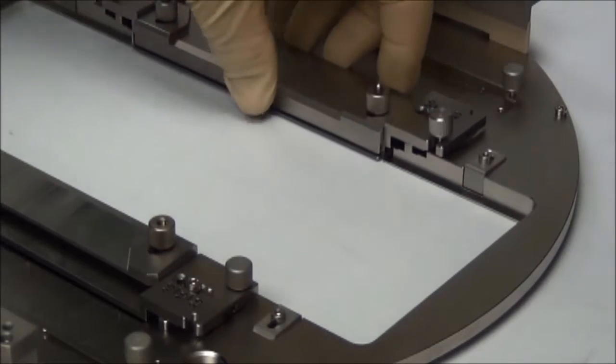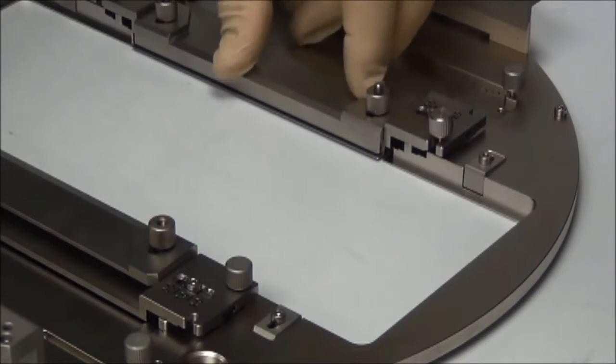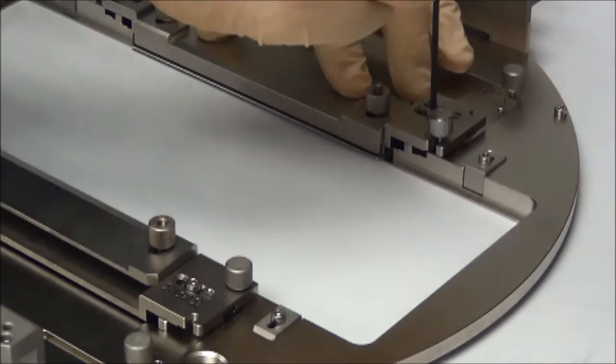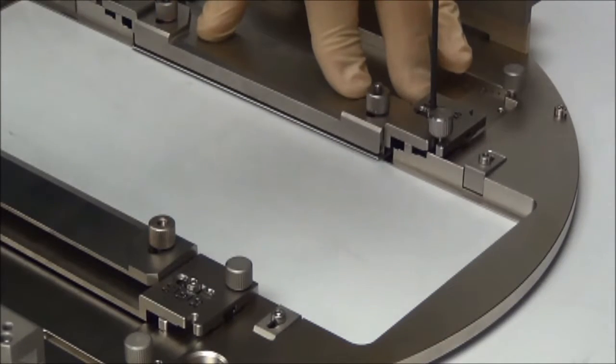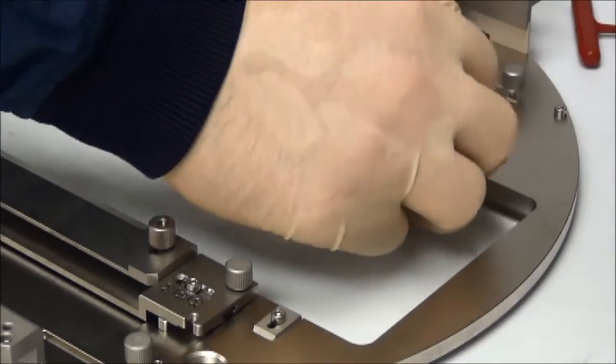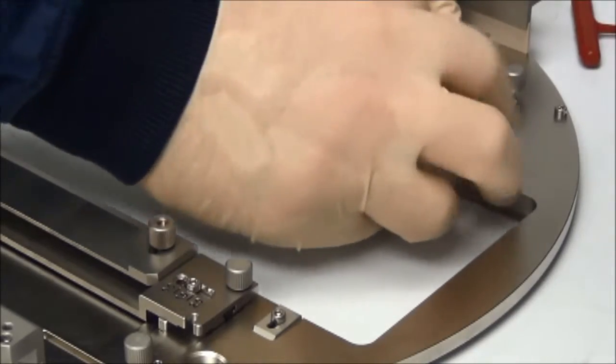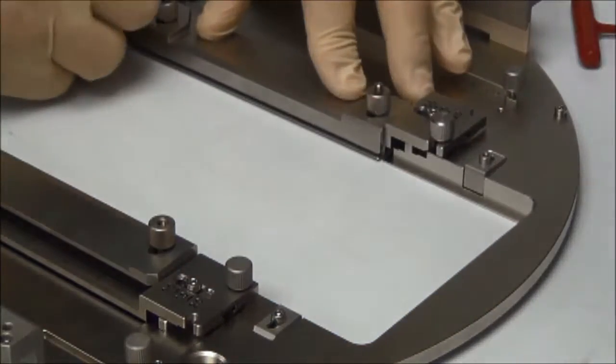Once the standoffs at both ends of the rail have been adjusted to the desired height, place the rail back onto the probe card holder plate and check for even seating. Then tighten the retaining screws for both standoffs, and then once again secure the rail into place using the two thumb screws.